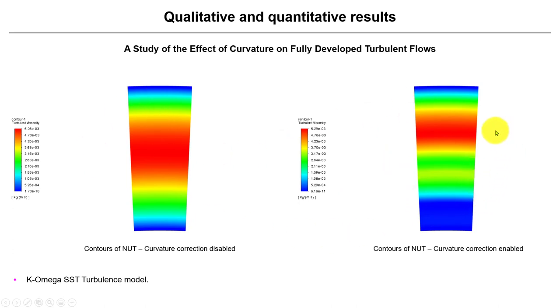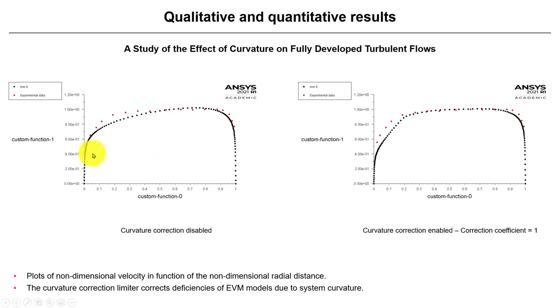Again, there is a strong influence of the strain rate and the spin tensor. So what this curvature correction is doing is just monitoring that and modifying the behavior of turbulence model according to those corrections. And also, we have here experimental data and see the comparison. So look at the experimental data and the numerical simulation. Disable and enable and clearly see the difference between these two profiles.